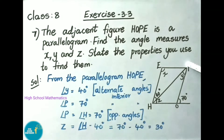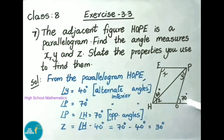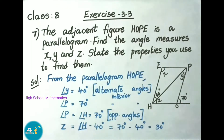Next, angle P is equal to 70 degrees. Why? Because here also these are alternate interior angles, so both are equal. So we got angle P equals to 70 degrees.